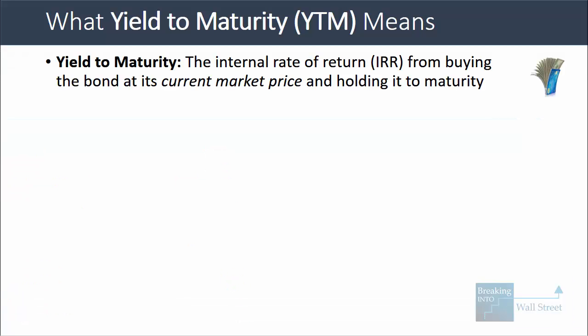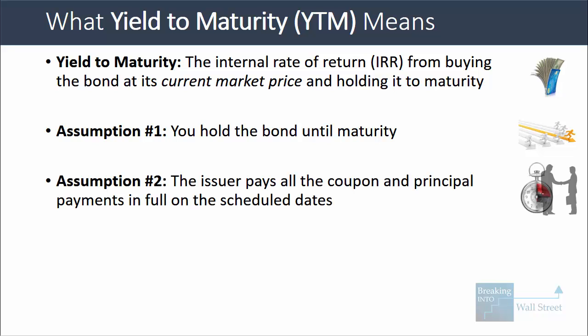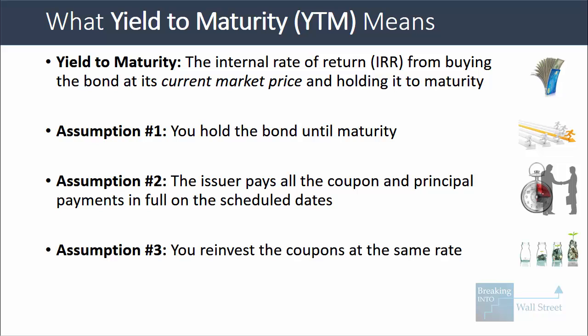A couple of assumptions have to be true for this to work. First, you have to hold the bond until maturity, otherwise this makes no sense. Second, you assume that the issuer pays all coupon and principal payments in full on the scheduled dates, which may or may not happen in real life. Third, you assume that you reinvest the coupons at the same rate. Just like the IRR calculation is sometimes suspect because of this reinvestment assumption, the same is true with the yield to maturity.